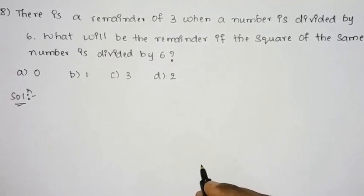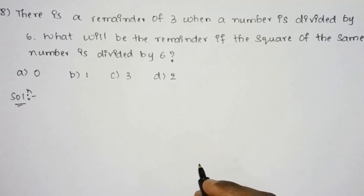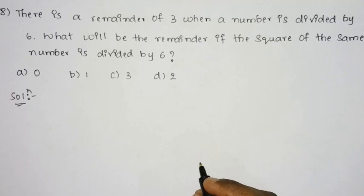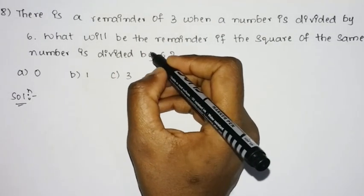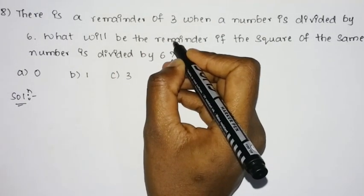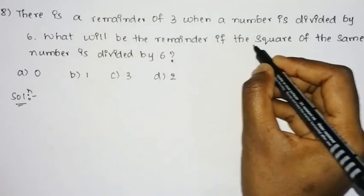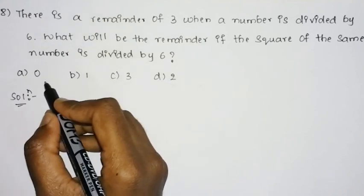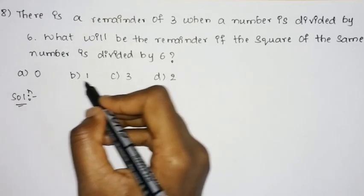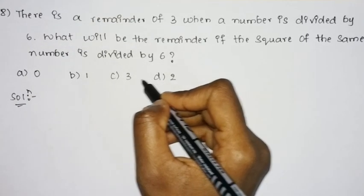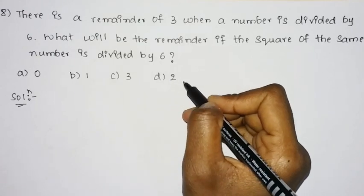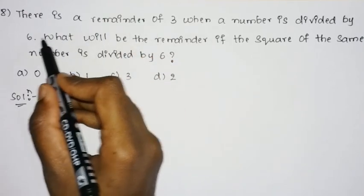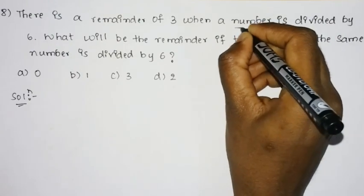Hello friends, welcome to Insight Learners. In this video we shall discuss the next aptitude question which was asked in Amazon Tech Ops Associate SMT Bangalore. The question is: there is a remainder of 3 when a number is divided by 6. What will be the remainder if the square of the same number is divided by 6? The options are: A) 0, B) 1, C) 3, and D) 2.